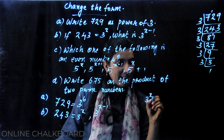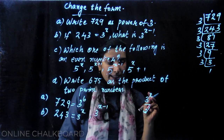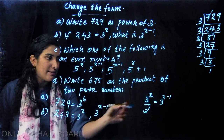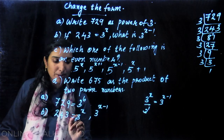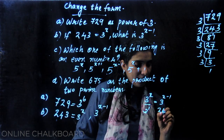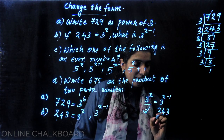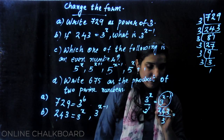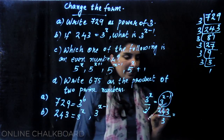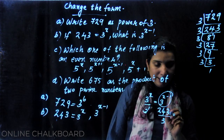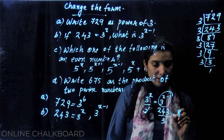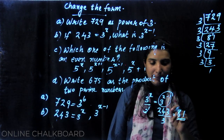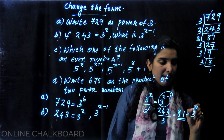3 raise to x divided by 3 raise to 1 — that's what we have to do. If we apply the division rule, 3 raise to x minus 1. 3 raise to x has the value 243. 243 divided by 3 raise to 1. Let's divide: 243 divided by 3. The value of 3 raise to x minus 1 — we choose 81.